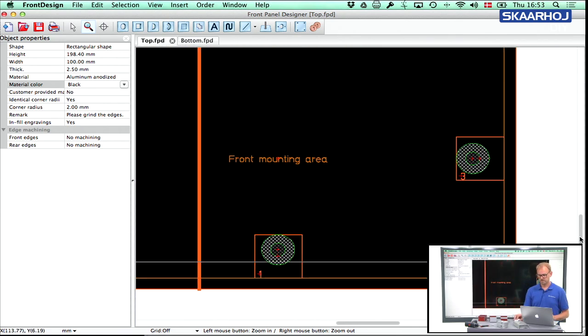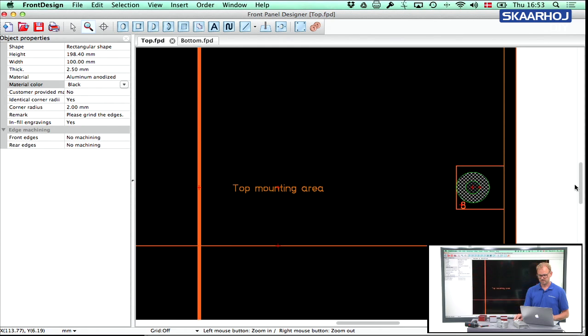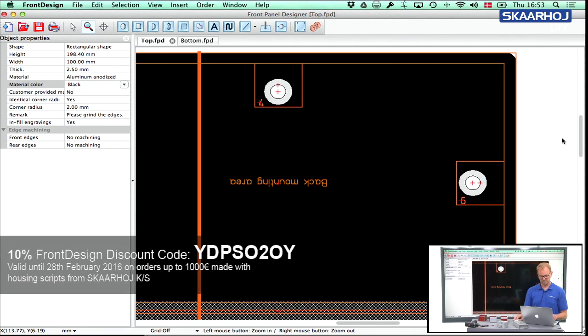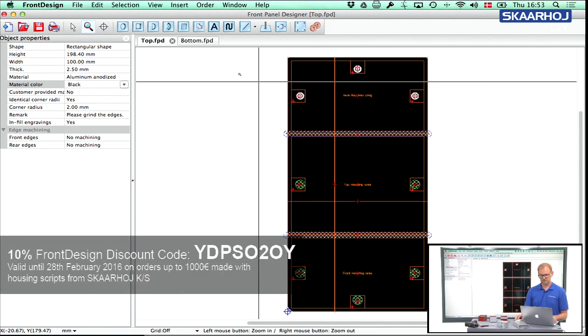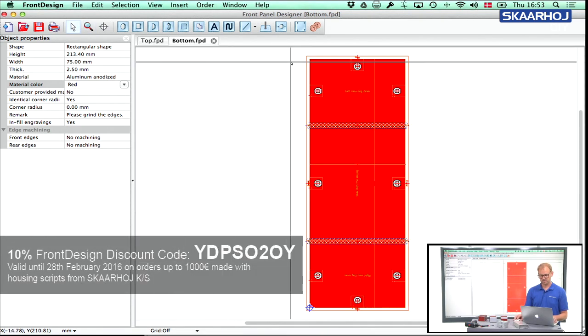And it says front mounting area. And you can see the top mounting area and the back mounting area. Okay, so that was the top and then the bottom panel right here.